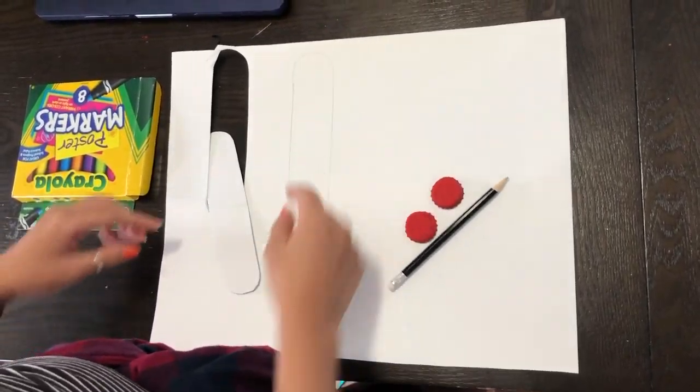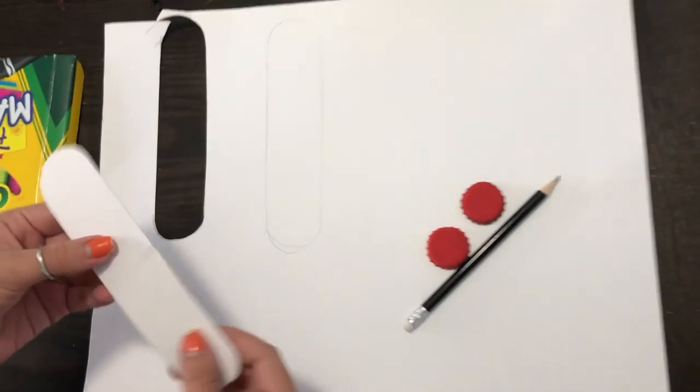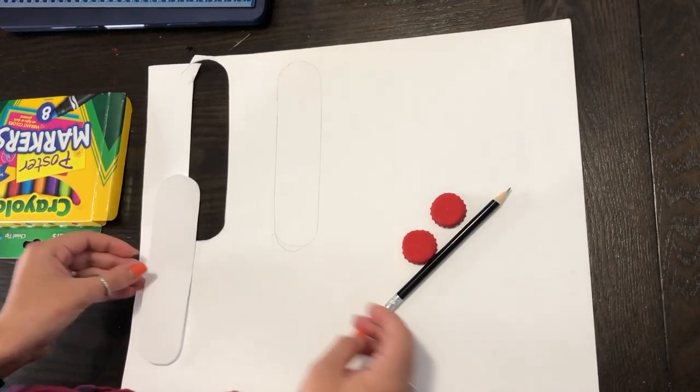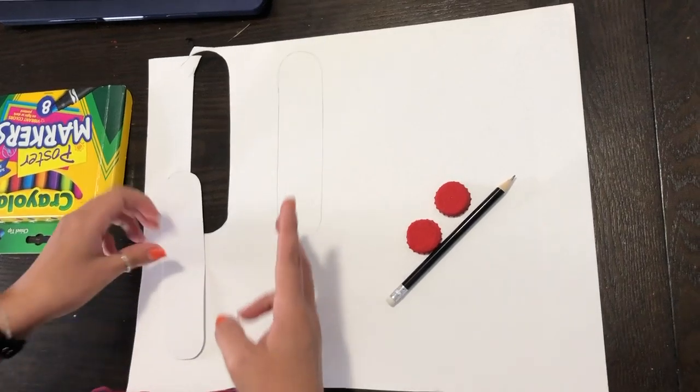Just like that, it kind of looks like a long rounded end ruler I guess. And then once you cut it out, remember you always want to face your scissors away from your body and turn your paper as you're cutting.